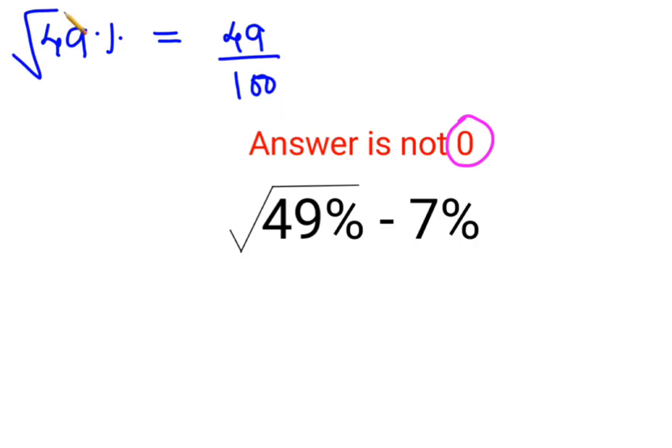And we had a root over here. So when you take the root of 49 upon 100, this comes out to be root of 49 is 7, root of 100 is 10.